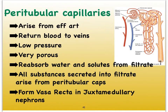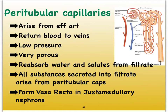The peritubular capillaries are really just a big cobweb of capillaries surrounding the loop of Henle as well as your convoluted tubules. They are typically low pressure like most capillary beds in the rest of the body, very porous, participating in gas exchange and exchange of nutrients and wastes, and they pick up water and good solutes from the filtrate. In the juxtamedullary nephrons, the majority of the capillary bed is made up of the vasa recta that wraps around that very lengthy loop of Henle.